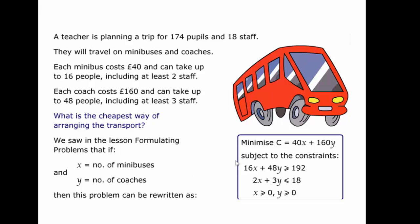We have formulated the problem and arrived at these constraints. 16x plus 48y has got to be greater than or equal to 192. Well that was because we had 192 people to transport and we can hold 16 in each minibus, where x represents the number of minibuses, and 48 seats in each coach, and y represents the number of coaches. So the total number of seats in minibuses will be 16 times x, and the total number of seats in coaches 48 times y.